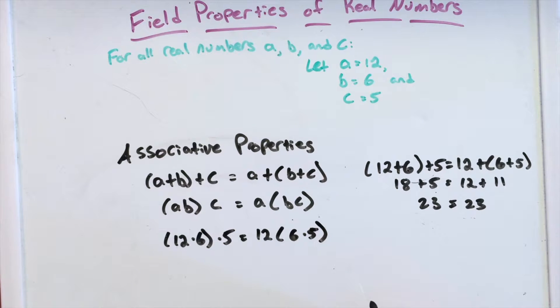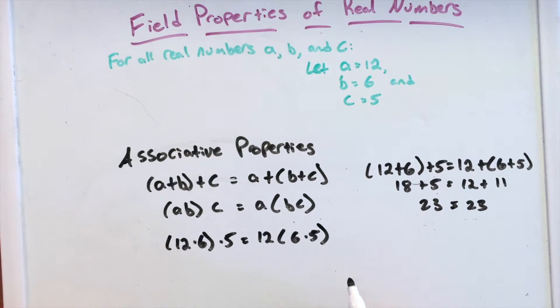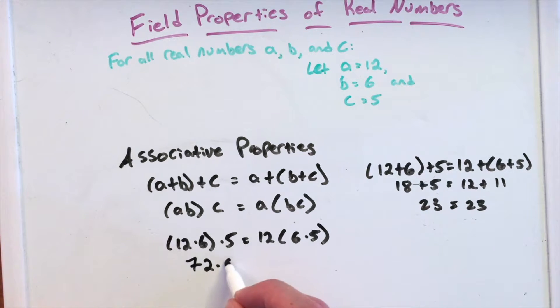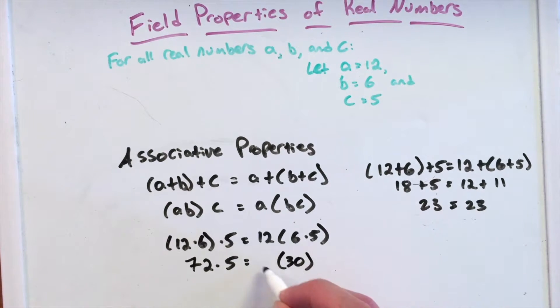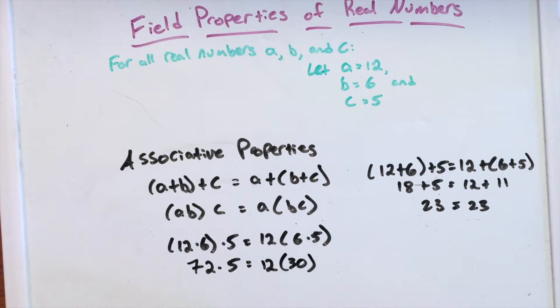We know from before that 12×6 gives us a product of 72 times 5. Equal to 6×5 gives us that 30 times 12. And these two numbers will still equal.